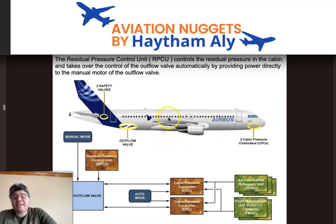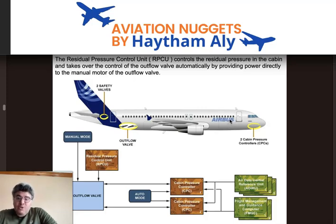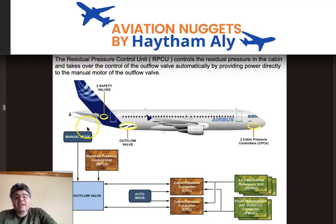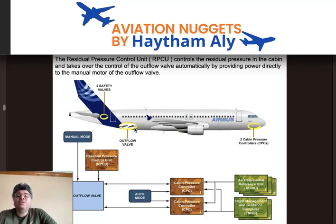If any residual pressure remains in the cabin when someone tries to open the door, the door may be blown out and could hurt the operating personnel. To prevent this, Airbus introduced the RPCU, which takes over control of the manual motor directly after landing to ensure the outflow valve is fully open on the ground, eliminating any residual pressure in the cabin before the aircraft reaches its parking position.